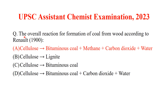11 questions came from the coal analysis topic. The first question is the overall reaction for formation of coal from wood according to Reynolds. The answer is option A: cellulose will be converted into bituminous coal. In this process, cellulose goes through peat and lignite, and ultimately bituminous coal will be converted into anthracite. During this process, volatiles such as methane, carbon dioxide, and water will be eliminated.